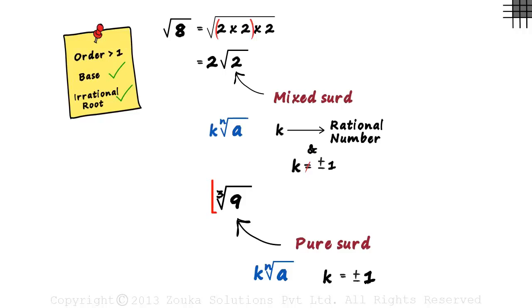Look at the second example for instance, cube root of nine. Reducing nine to its prime factors, we can write this as cube root of three times three. But we cannot reduce it further, and that's why it's only a pure surd.